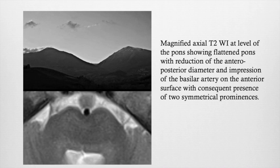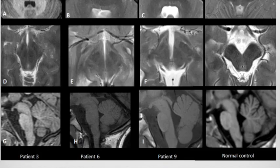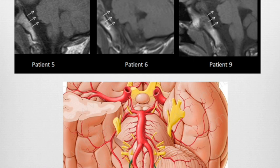We also have what we call the twin mountain sign: in axial views, the pons shows a reduction of the midline anteroposterior diameter with two symmetrical prominences due to impingement of the basilar artery. This was present in all patients, as you can see here in comparison to the normal control on the right, together with lateral-lateral compression of the midbrain and an abnormal shape of the brainstem. Going slightly parasagitally, the pontine artery from the basilar created an indentation of the pons in all patients.